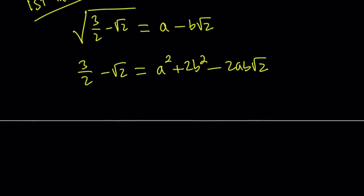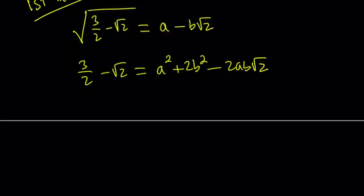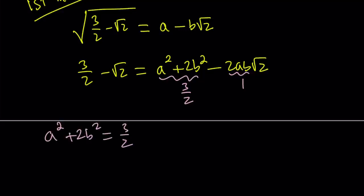Comparing the right-hand side and the left-hand side, we can say that the rational part needs to equal 3/2, and the coefficient of √2 needs to equal 1. Since they both have the minus sign, I can set it equal to positive 1. From here, we get a system of equations: a² + 2b² = 3/2, and ab = 1/2.